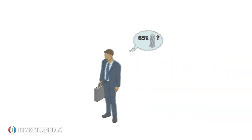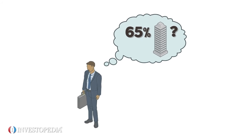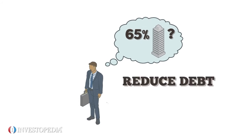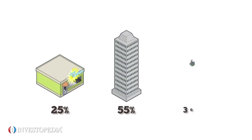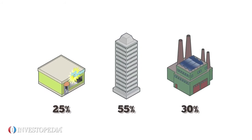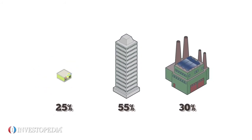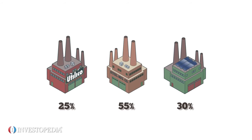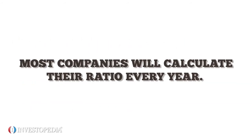Investors should be wary of companies with higher ratios, and management should find ways to either reduce debt or increase assets. The acceptable long-term debt to total assets ratio varies between industries and is best used for comparisons between similar firms. Most companies will calculate their ratio every year.